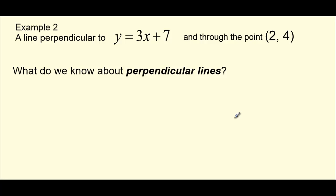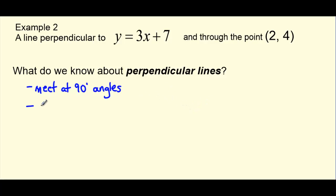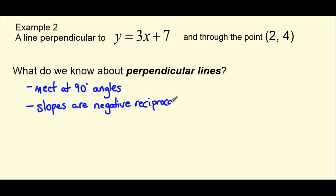What do we know about perpendicular lines? Well, perpendicular lines meet each other at 90-degree angles — we also call those right angles. We know that lines meeting at right angles have slopes that are negative reciprocals. Negative reciprocals means the flipped version of the fraction and also a different sign. So for example, if we had 3 fourths, the negative reciprocal would be negative 4 thirds.